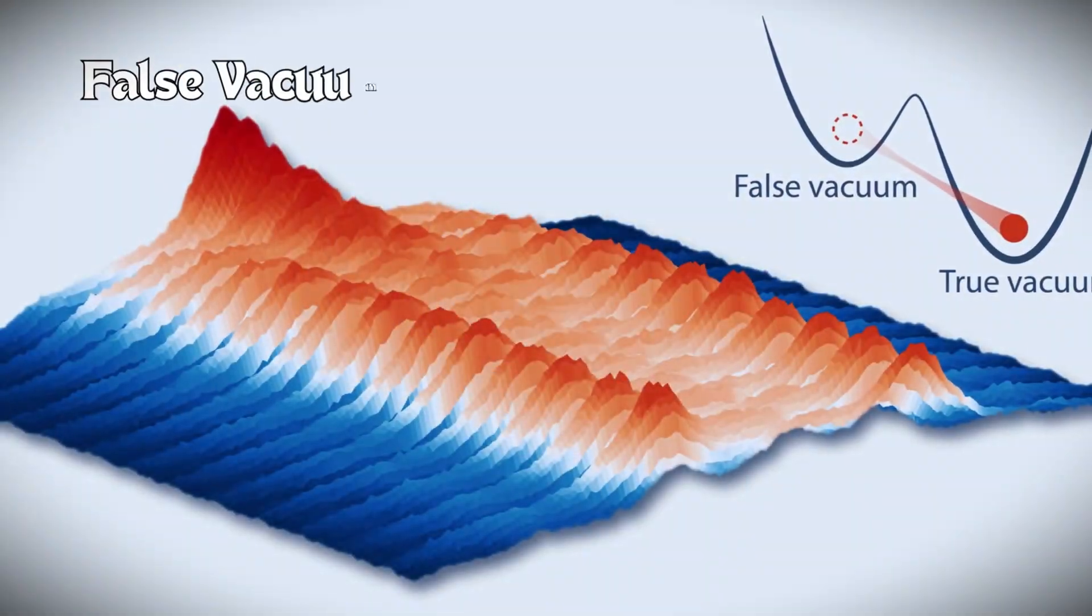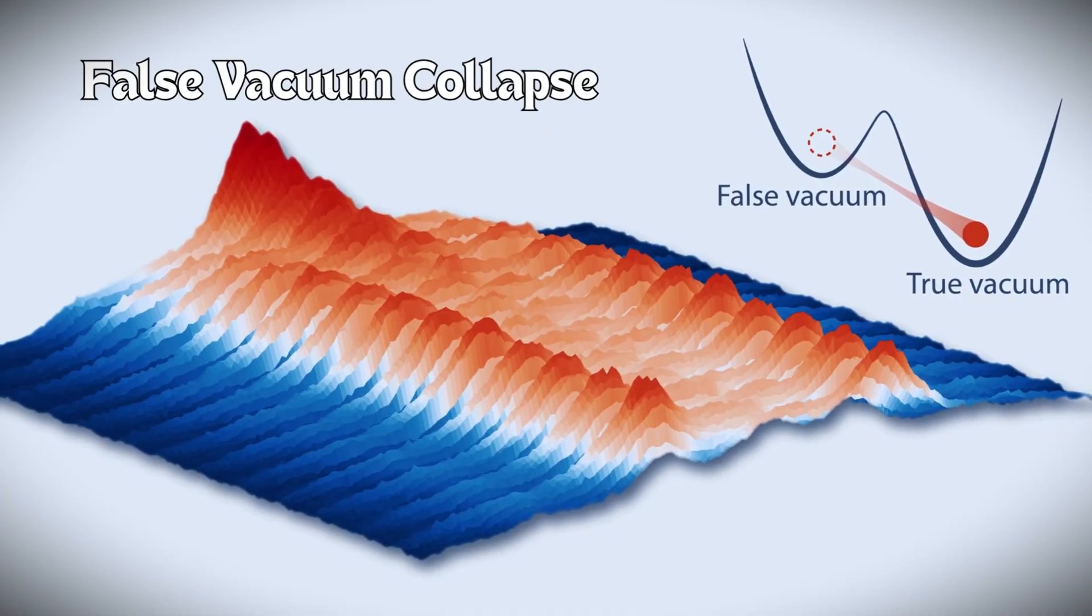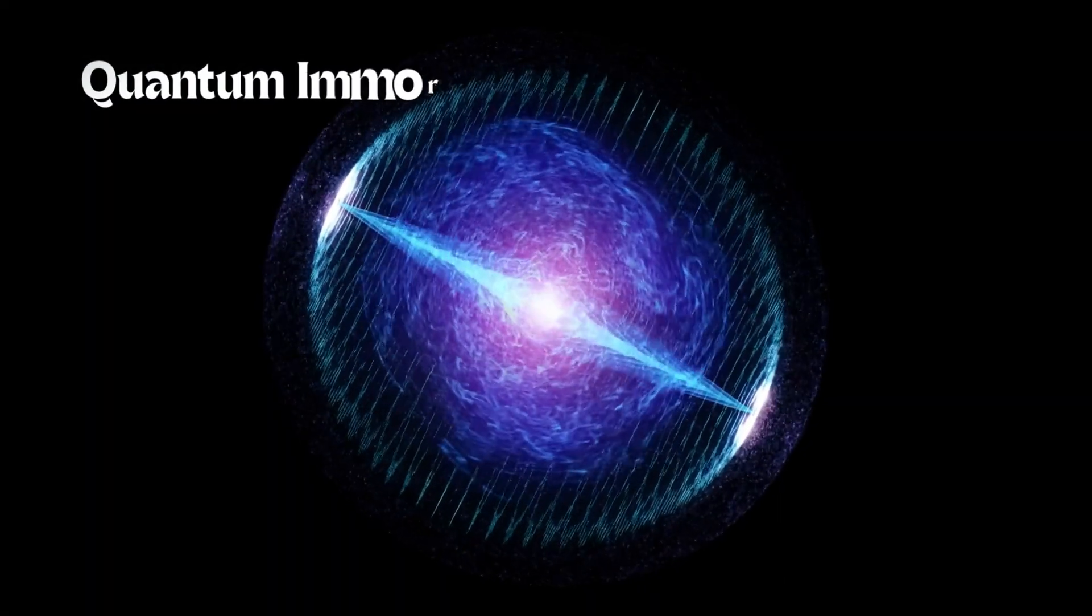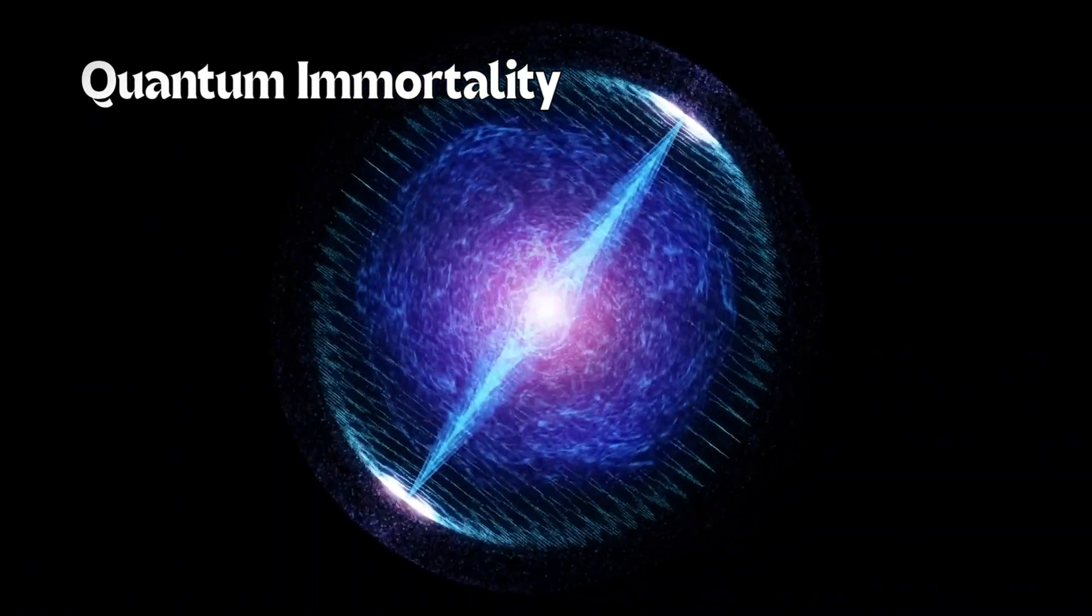False Vacuum Collapse: A quantum bubble could rewrite physics laws, creating a new universe. Quantum Immortality: In the multiverse view, some version of consciousness always continues.